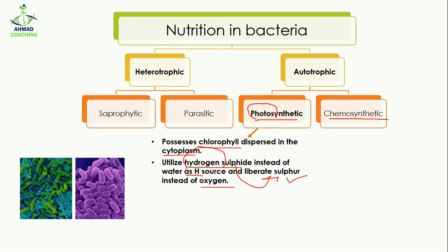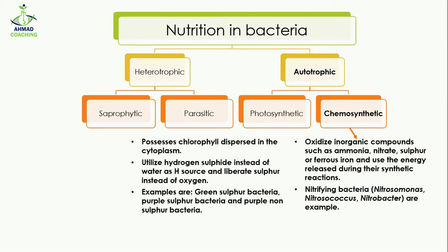So when photosynthetic bacteria generate their food, they release sulfur gas instead of oxygen gas, which is what plants produce. Examples of photosynthetic bacteria include green sulfur bacteria and purple sulfur bacteria. Then come the chemosynthetic bacteria — as the name indicates, they are related to chemical processes.